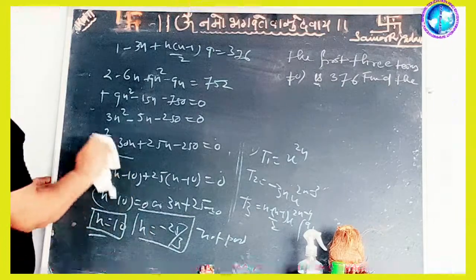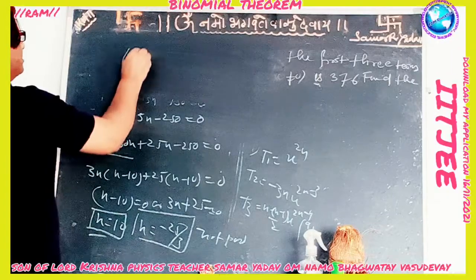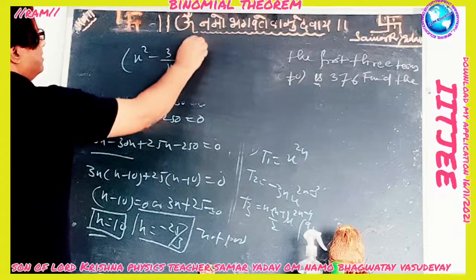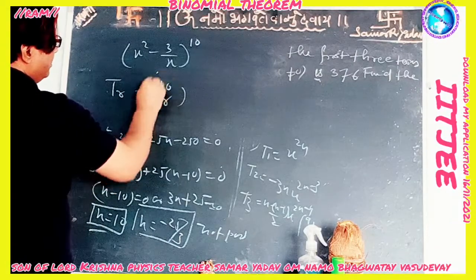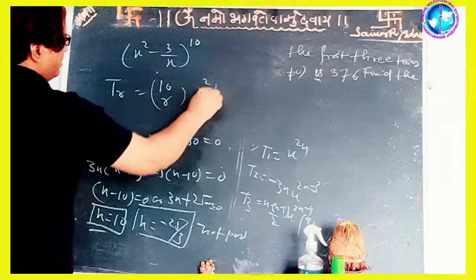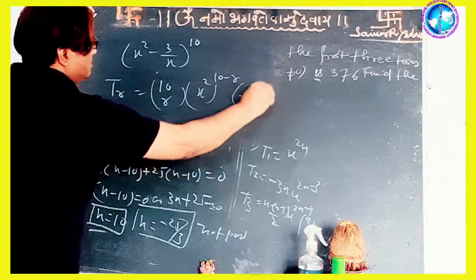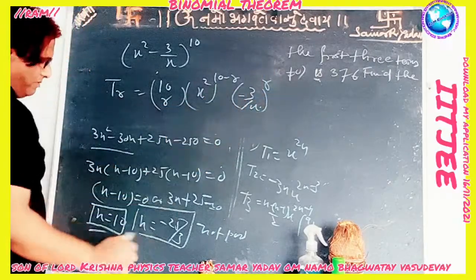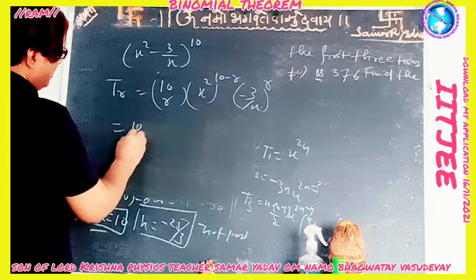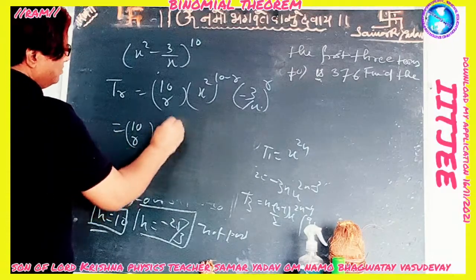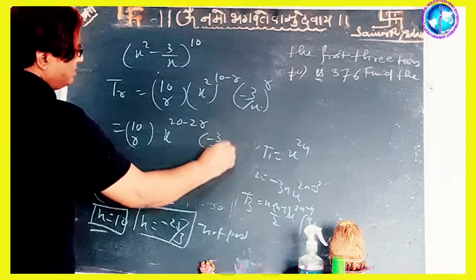Putting n = 10 in the expression (x² - 3/x)^10, the general term is: T_r = 10C_r · (x²)^(10-r) · (-3/x)^r = 10C_r · x^(20-2r) · (-3)^r · x^(-r) = 10C_r · (-3)^r · x^(20-3r).